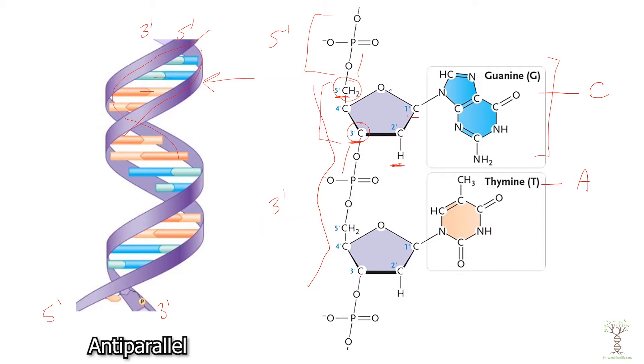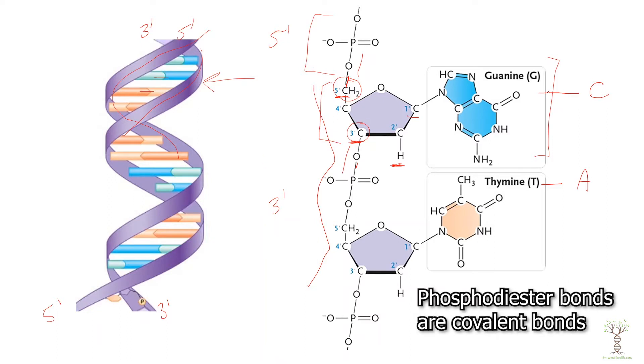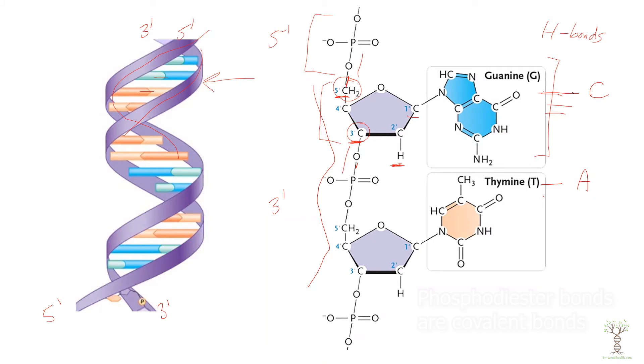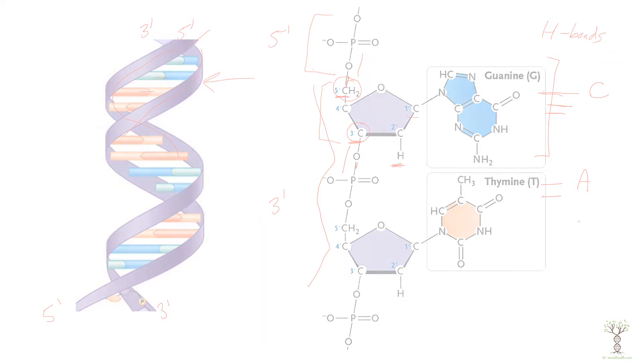The bonds that hold these things together, the phosphates and the sugars, are combined by phosphodiester bonds and the nucleotides are held with each opposite nucleotide by hydrogen bonds. There are three hydrogen bonds between guanine and cytosine and two hydrogen bonds between adenine and thymine.